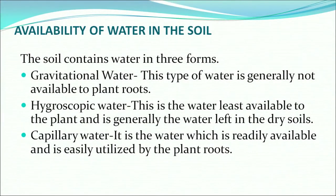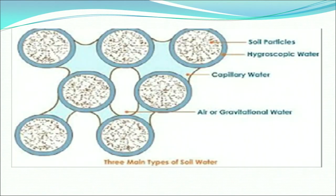How does water become available in the soil? The soil contains water in three forms: gravitational water, hygroscopic water, and capillary water. Gravitational water is not generally available to plant roots as it is deep in the soil. Hygroscopic water is the least available and is generally left in dry soils. The available water is capillary water — it is readily available and easily utilized by plant roots. Here is an illustration of gravitational, capillary and hygroscopic water.